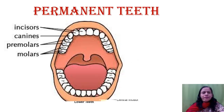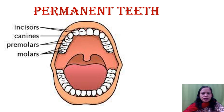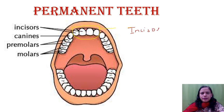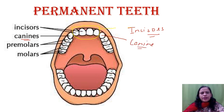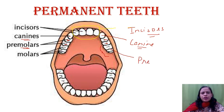Now let's look at the permanent set of teeth. In the center we have four incisors — one, two, three, and four. Then we have a canine on either side. Then there are two premolars on each side, followed by three molars on either side of the jaw.